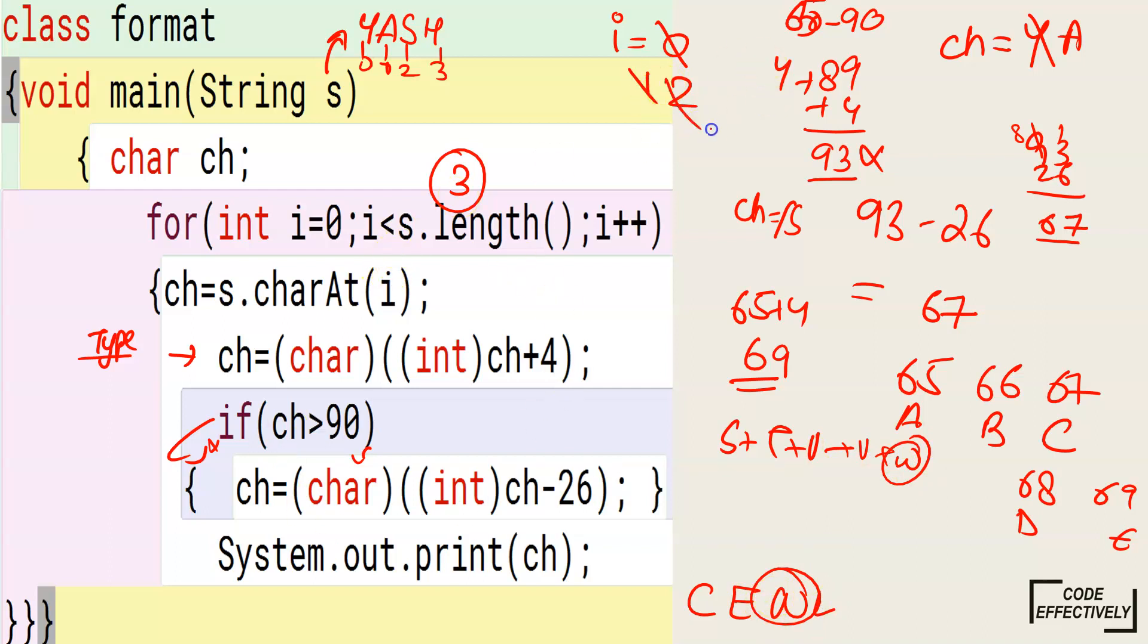Again the loop will go back, and then it will be 3. It will check, okay it is correct, less than length. Length is 4, so it is true. Again it will go. Then it will take H, and then H, and we will add 4 characters to it, and then L will be printed. This is how the whole loop will go.